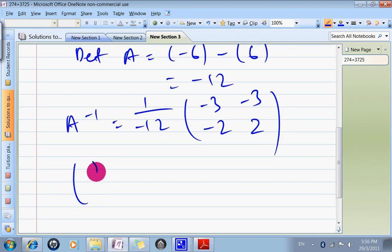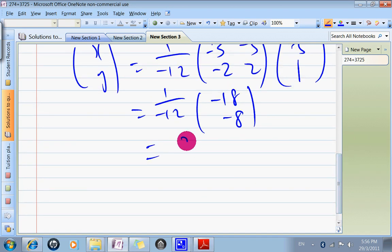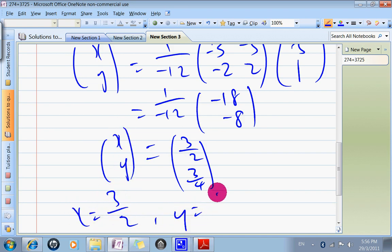Therefore, xy equals to the A inverse multiplied by 5, 1. So 1 over negative 12. This times this times this times this will give me negative 18. This times this times this times this will give me negative 8. So that will give me 3 over 2 and 3 over 4. So x equals to 3 over 2, y equals to 3 over 4.